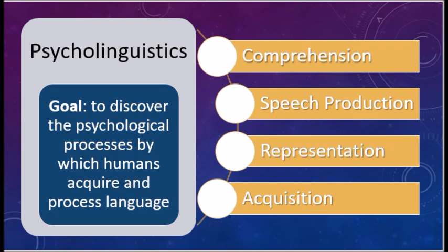Chomsky's criticism proved a turning point towards psycholinguistics. The goal of psycholinguistics is to discover the psychological processes by which humans acquire and process language. There are four major concerns of psycholinguistics. First is comprehension — how people understand spoken and written language and process its different components. Second is speech production — the physical and mental processes that help people create language. Third is representation — how different components of language are represented to make a story or conversation. And fourth is acquisition — how we learn language, including foreign languages.